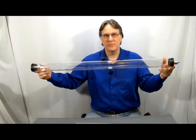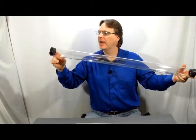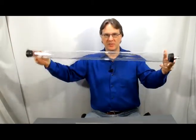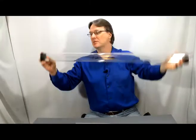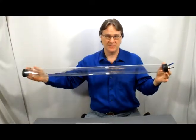So here we have the free fall tube. I have a little metal coin and a feather in there. When I invert this they do fall at different rates because the feather has more air resistance so it's not going to fall as fast.